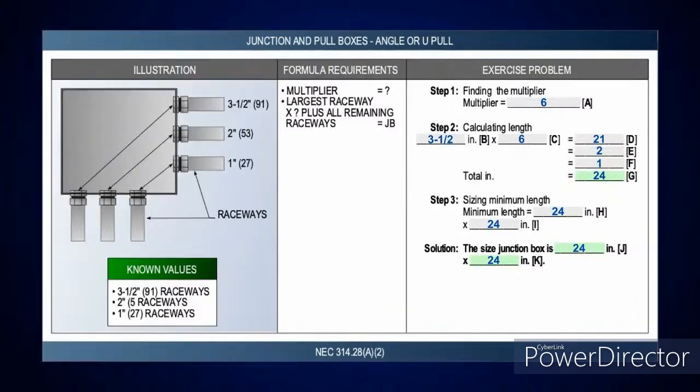For multiple raceways with an angle or U-pull, it's the same calculation. 3.5 inches times 6 gives you 21. Then you add the rest together — a 2-inch and a 1-inch gives you 24 inches. So the minimum length of that pull box has to be 24 inches by 24 inches. Simple calculations. Just remember, if you're doing an angle or U-pull, go look in Article 314, specifically 314.28 A1 and A2.